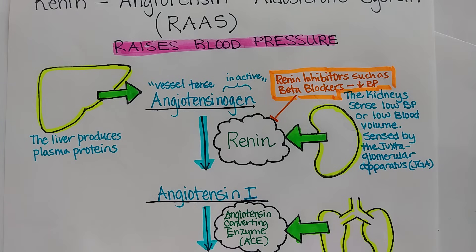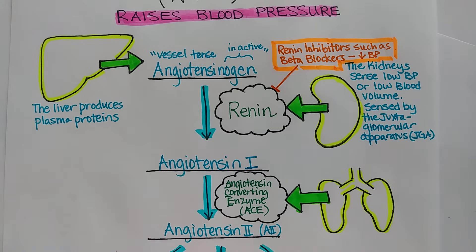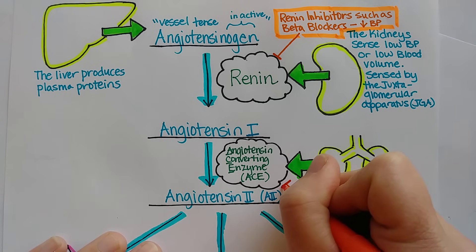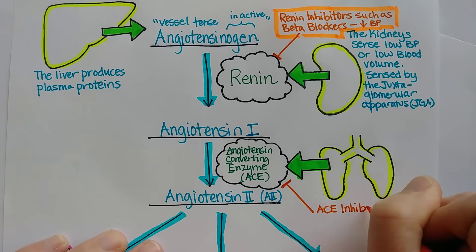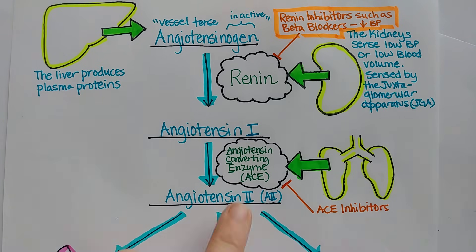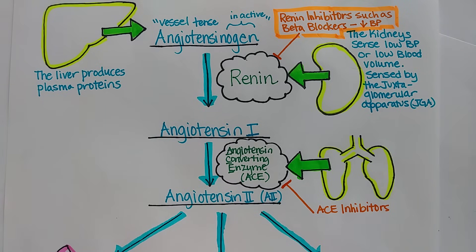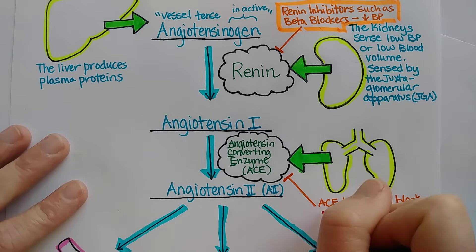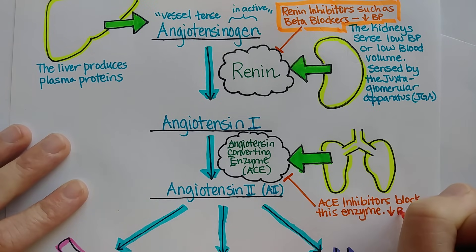The second really popular drug class is ACE inhibitors. These inhibit the angiotensin converting enzyme, so it can't convert angiotensin 1 into angiotensin 2 — and in that way, ACE inhibitors block this enzyme and decrease blood pressure.